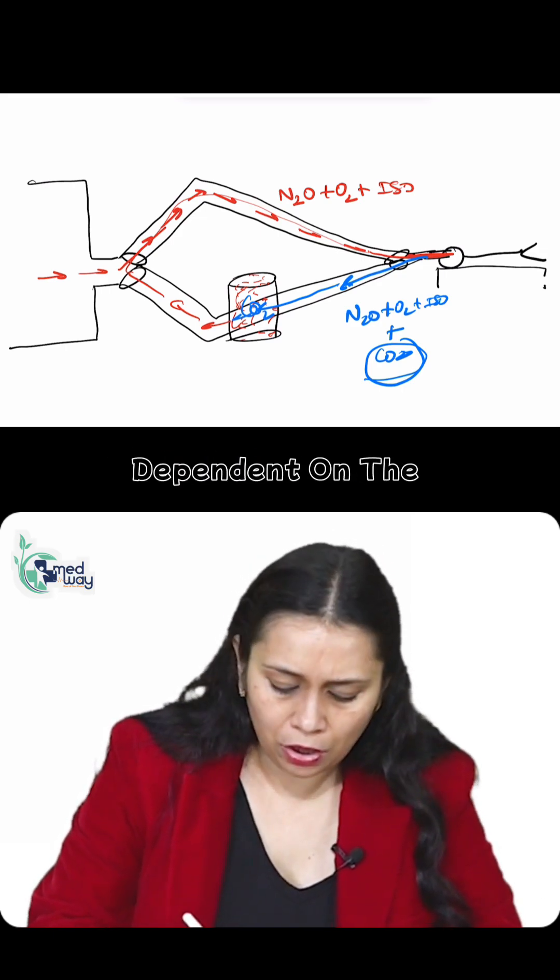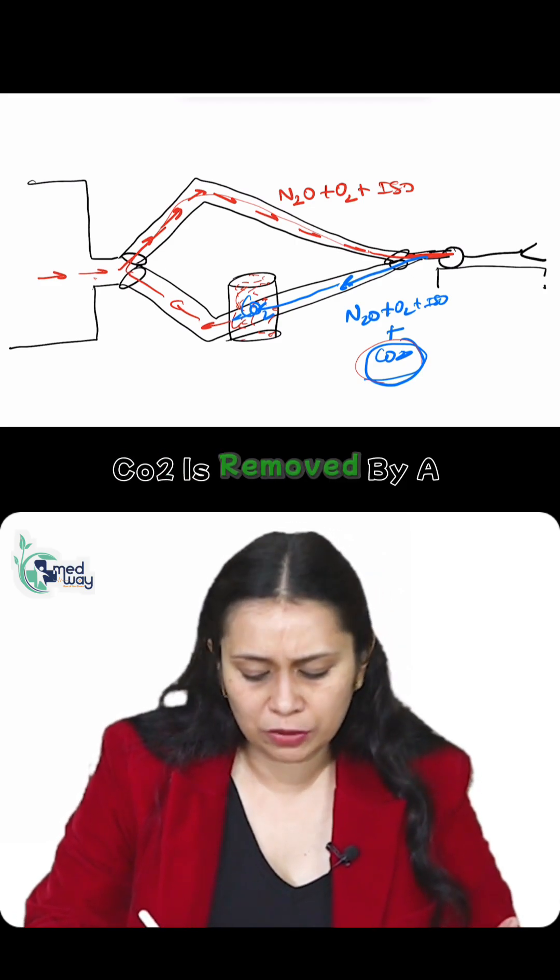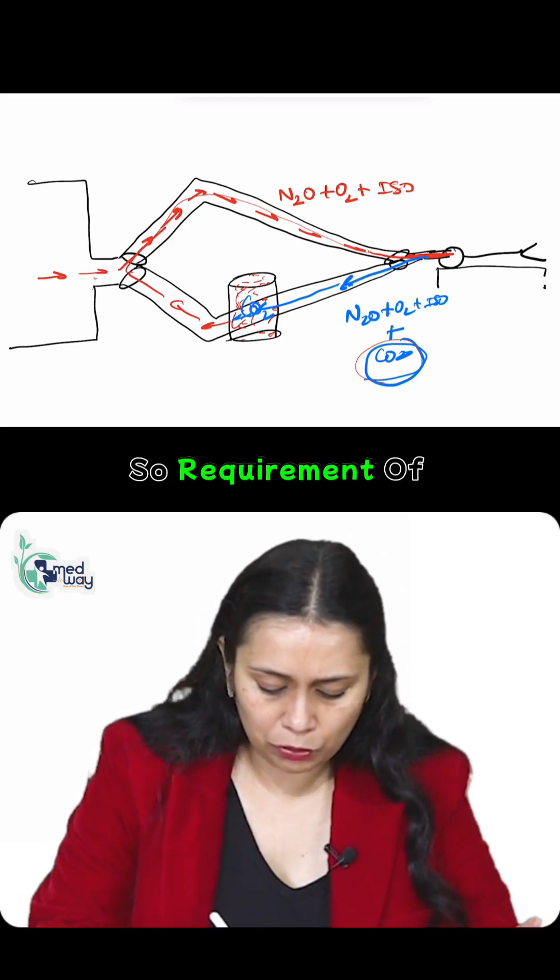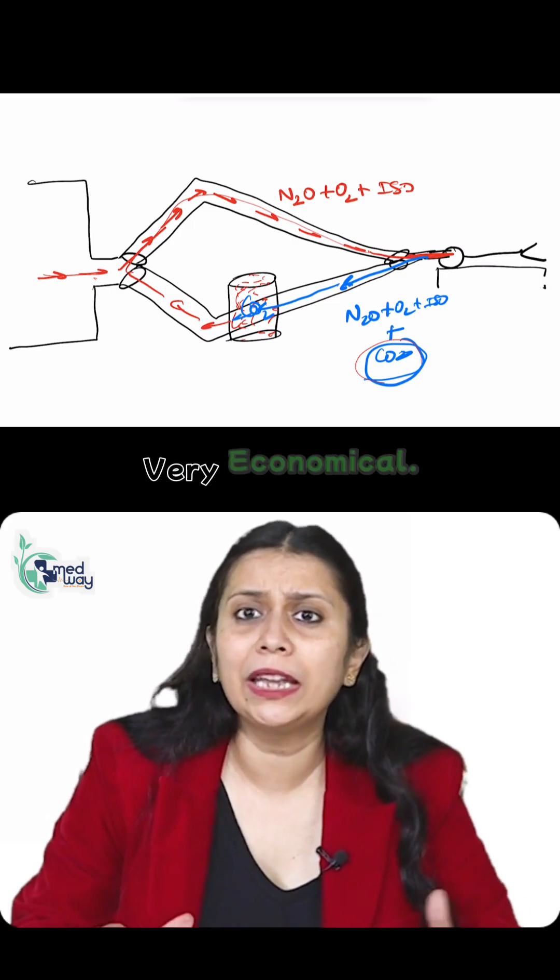We are not dependent on the fresh gas flow for removal of carbon dioxide. CO2 is removed by chemical reaction. So the requirement of fresh gas flow is very minimal, making this circuit very economical.